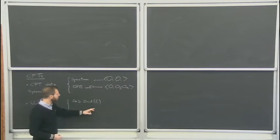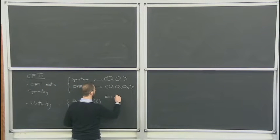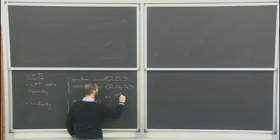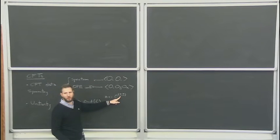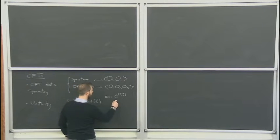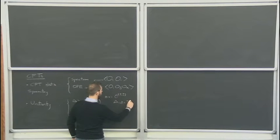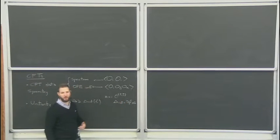In four dimensions, representations of Lorentz are specified by two indices J and J-bar, which are integers telling you how many dotted and undotted indices you have in the spinor formalism. For non-scalars, the unitarity bounds are something like (J + J-bar)/2 + d - 2. For J equals J-bar, this is a traceless symmetric operator, and you recover the old bound.